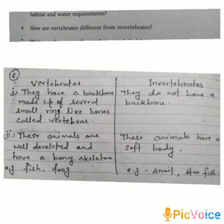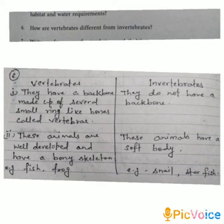To summarize: vertebrates have a backbone made up of several small ring-like bones called vertebrae — examples are fish and frog. Invertebrates do not have a backbone and have a soft body — examples are snail and starfish.